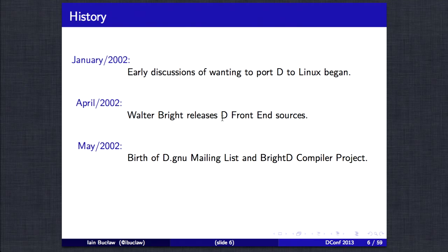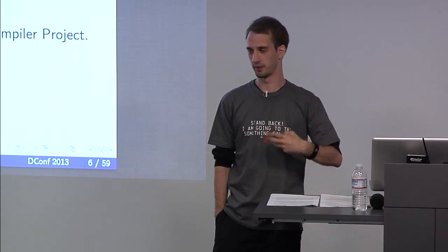The first use of this appearing was about a month later in May along with the birth of the d.gnu mailing list. A couple of people got together and started a project called BrightD. The idea of this was to take the D frontend and convert it to C which was compatible with what GCC 2.95 was written in at the time. However this idea was very much pushed against because nobody actually wanted two separate versions of the D frontend, one in C and one in C++.